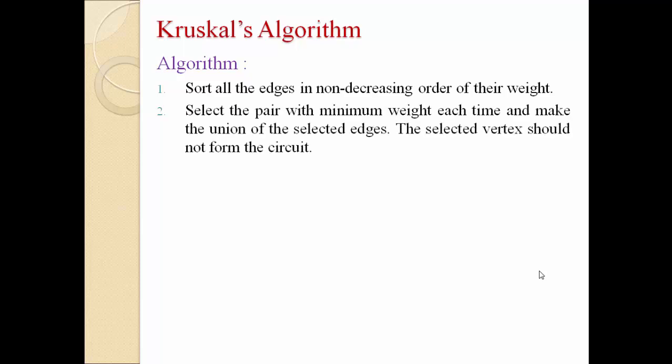Step two: select the edge with minimum weight each time and make the union of the selected edge. In Kruskal's algorithm, you can select any edge which has a minimum cost — unlike Prim's algorithm, where the next edge must be adjacent to an already-selected node. However, the selected vertex should not form a cycle. Step three: repeat until all vertices are covered.